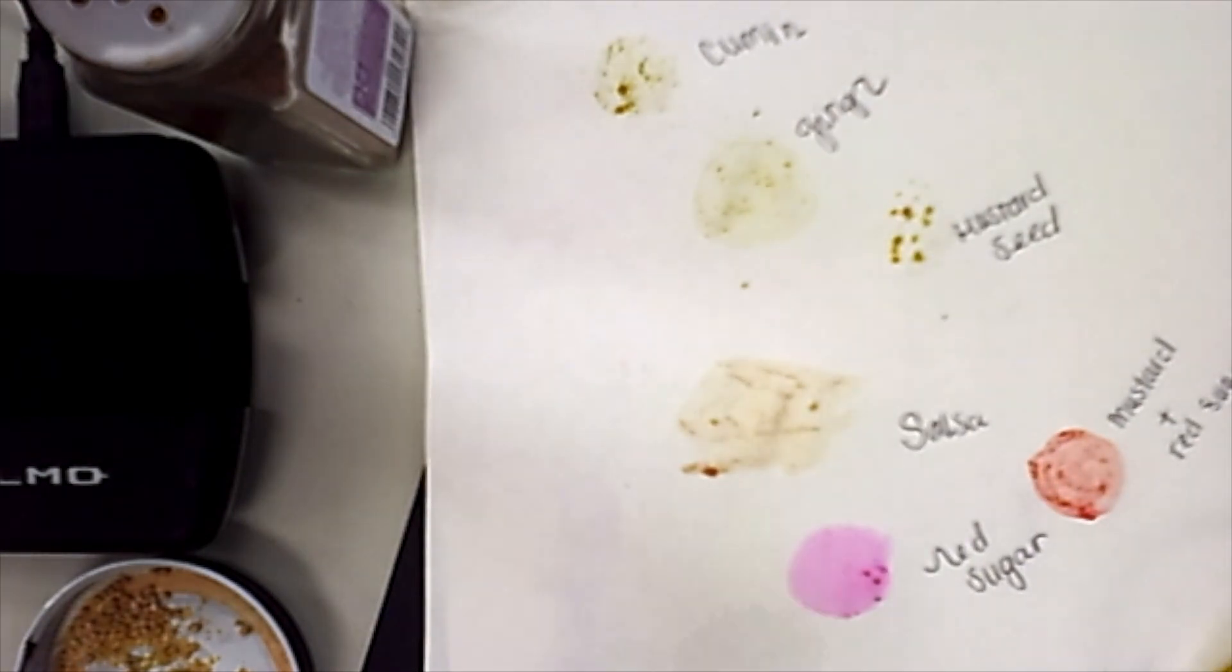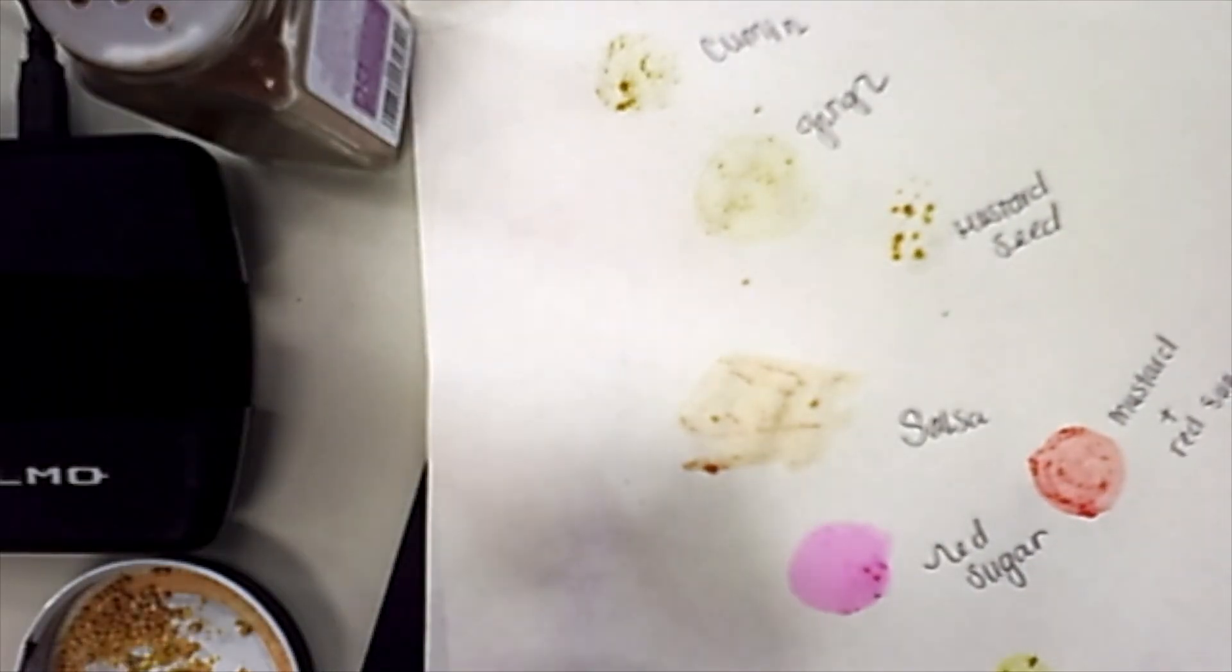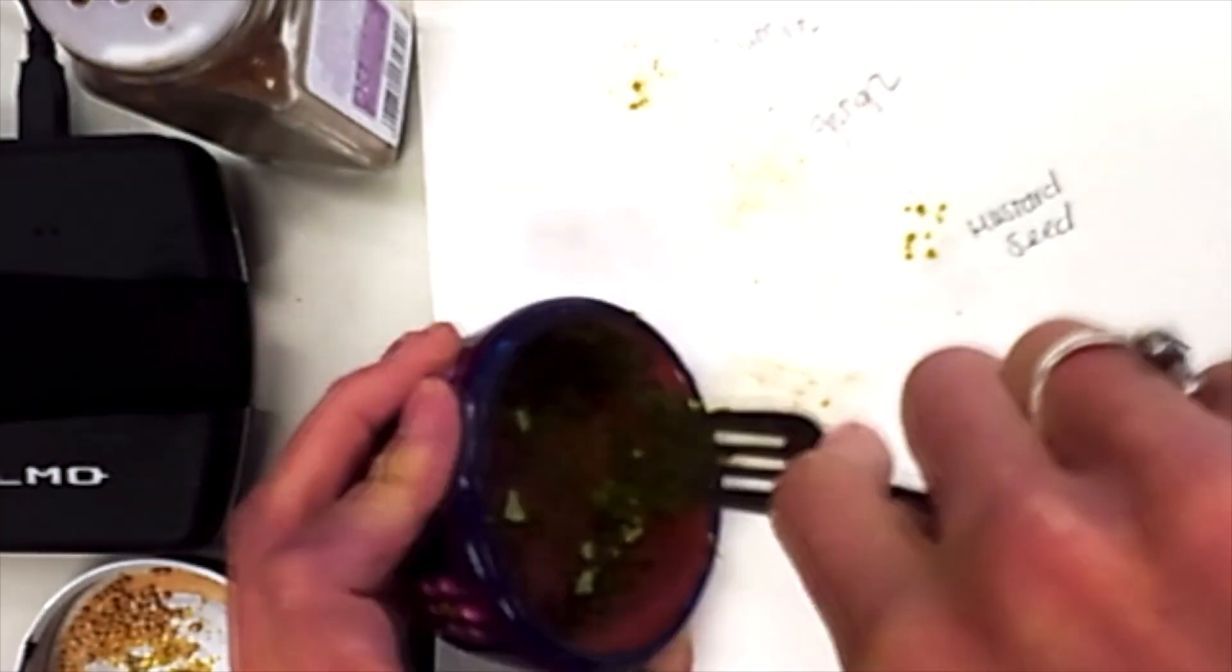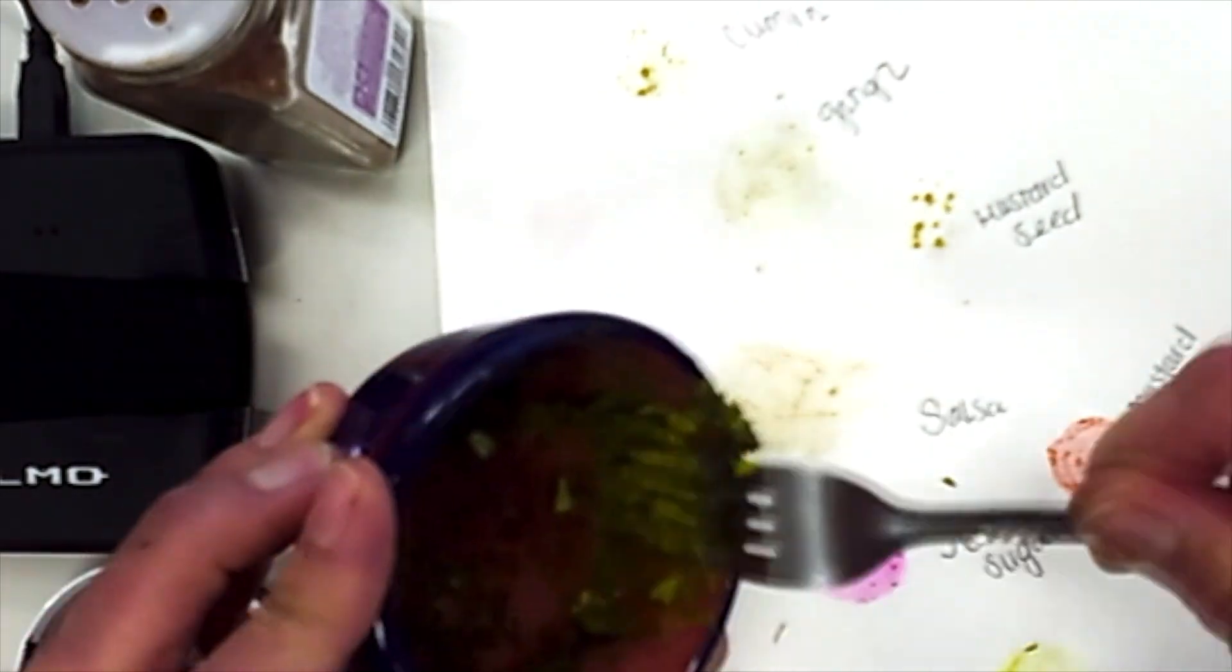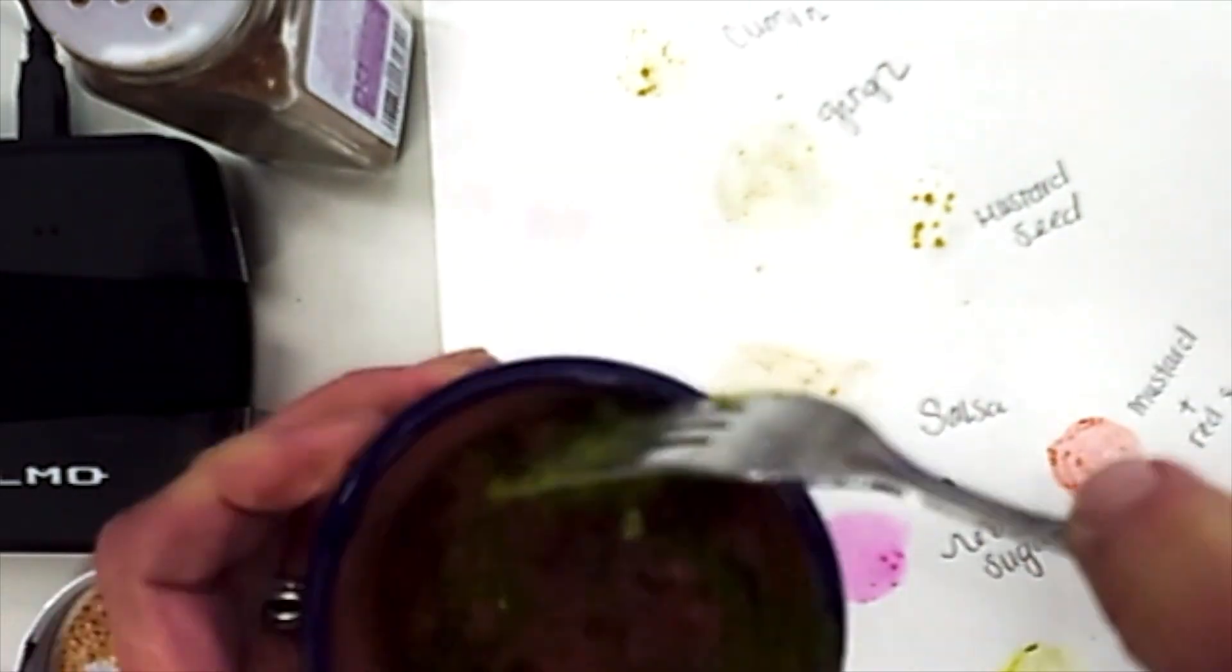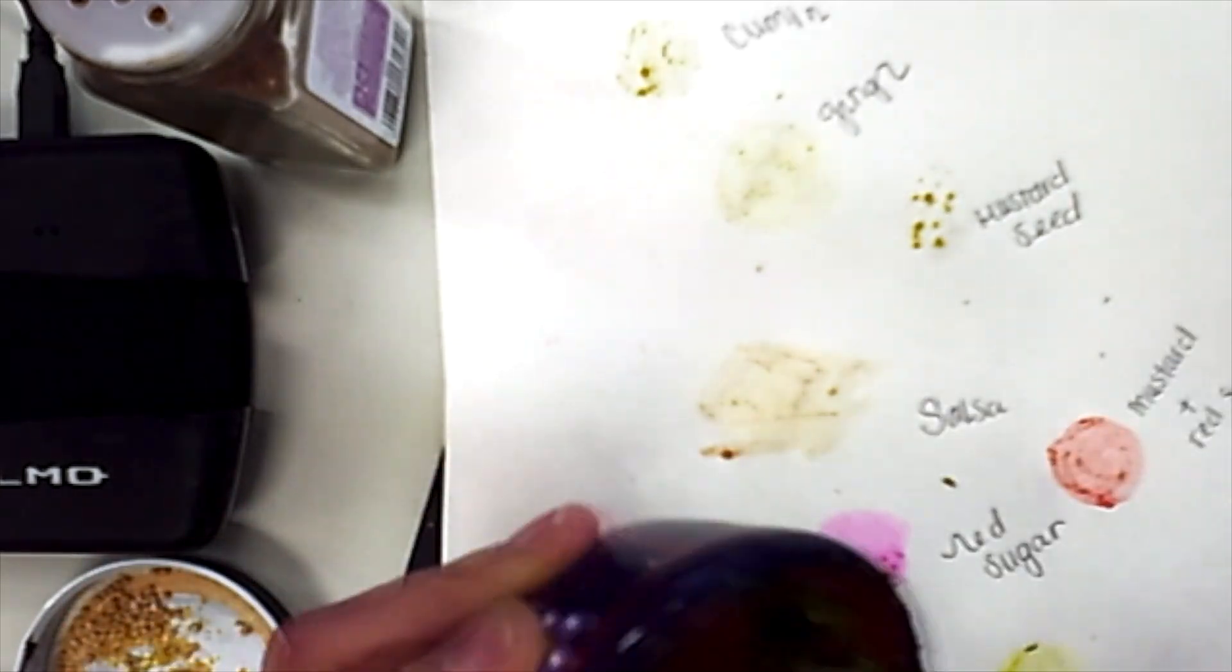When I mixed that with the mustard it made a pretty cool one. You see salsa on there, that kind of turned out icky. Mustard seed, ginger, cumin, all kind of light neutrals. Now I'm trying to make green, really hard. I'm mushing up a bunch of dill and vinegar.